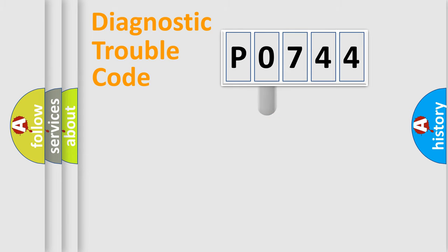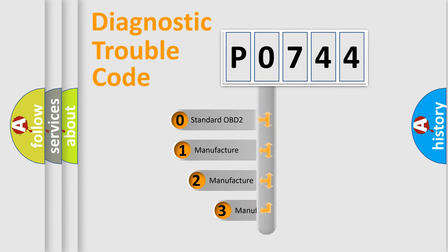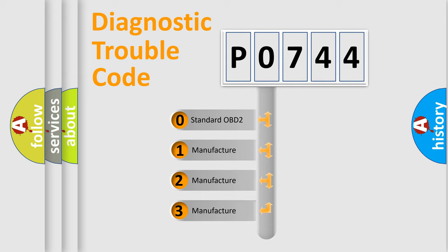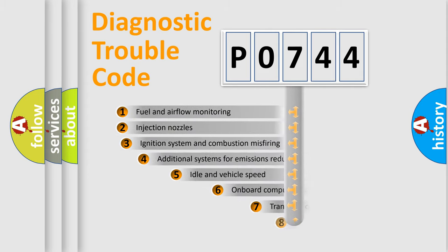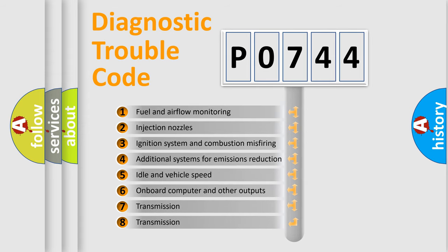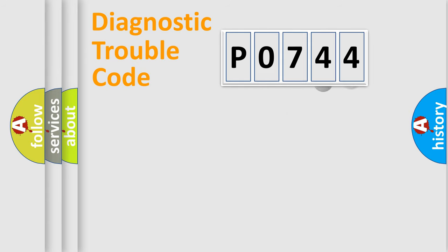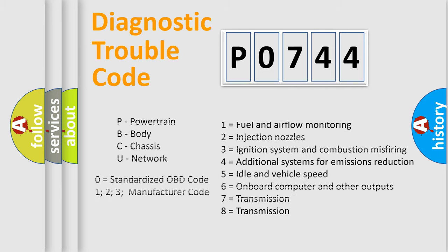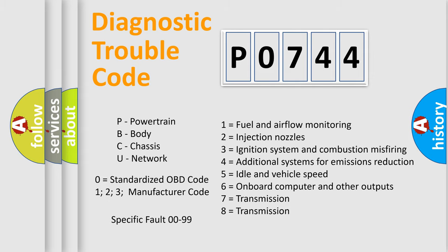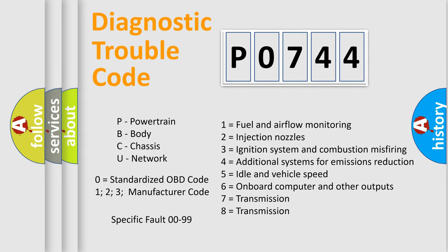This distribution is defined in the first character of the code. If the second character is expressed as zero, it is a standardized error. In the case of numbers 1, 2, or 3, it is a more specific expression of a car-specific error. The third character specifies a subset of errors. This distribution is valid only for the standardized DTC code, and only the last two characters define the specific fault of the group. This division is valid only if the second character is expressed by the number zero.